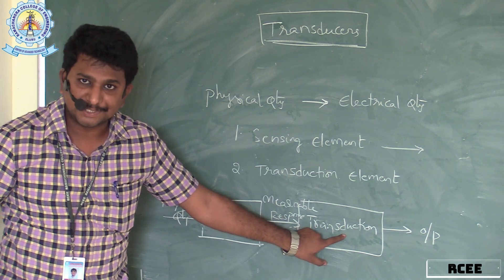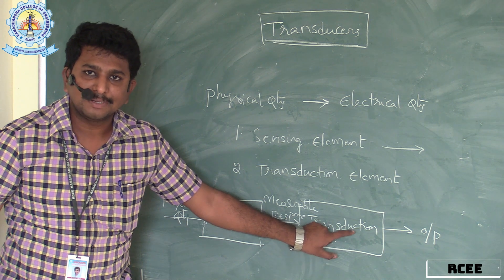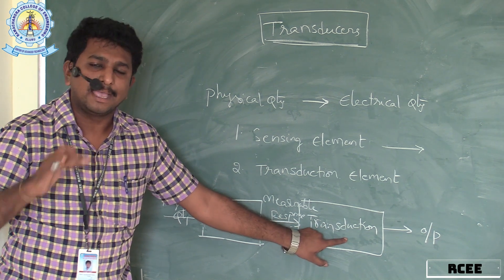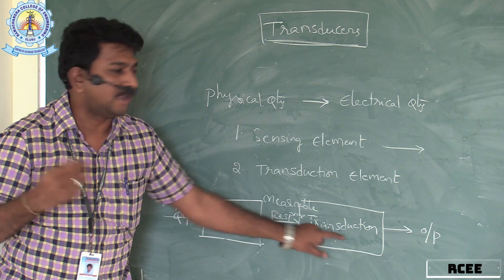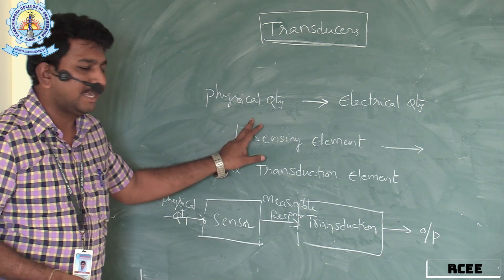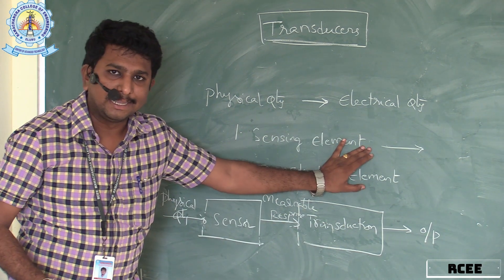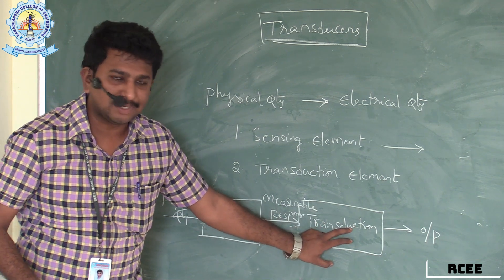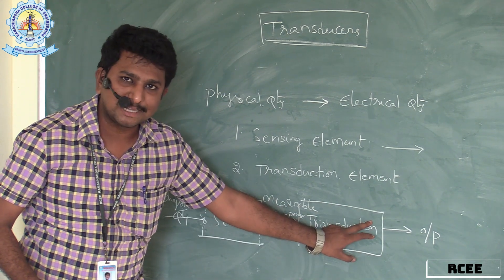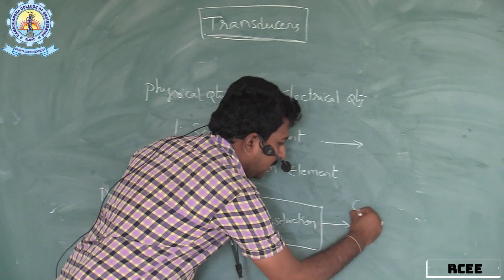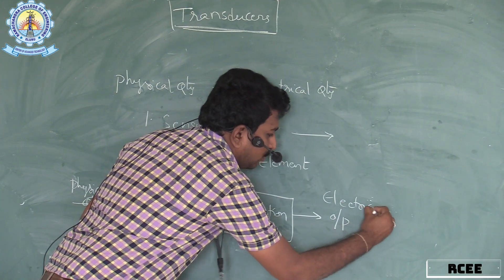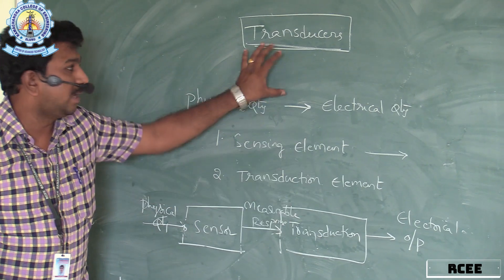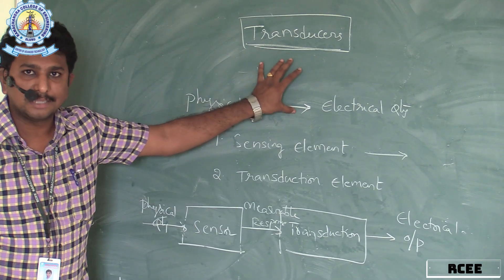Transduction is the entire process of converting a physical quantity into an electrical quantity. Once the transduction process is completed, we get the electrical output. This is the basic diagram behind transducers.